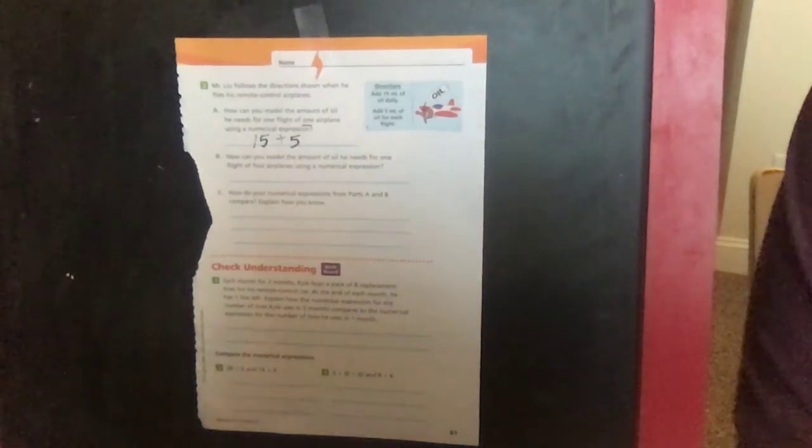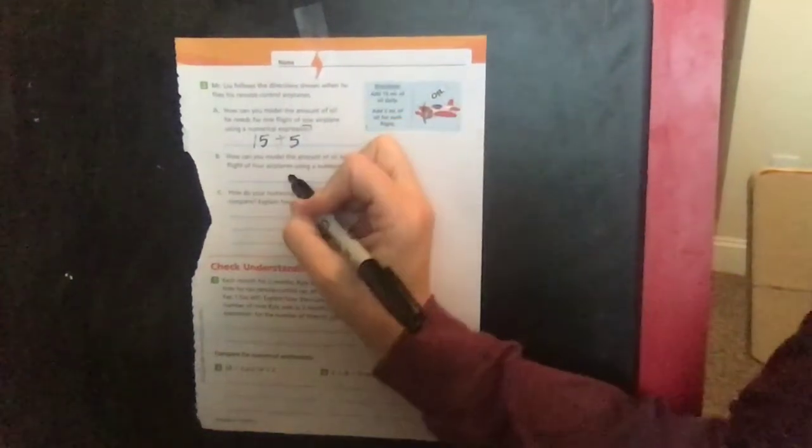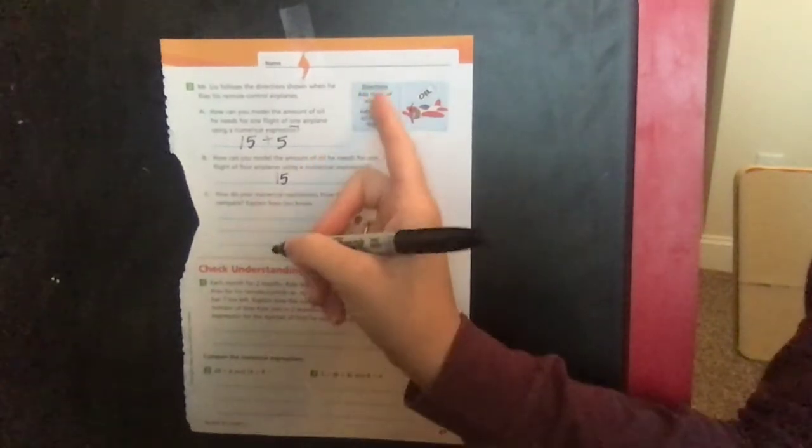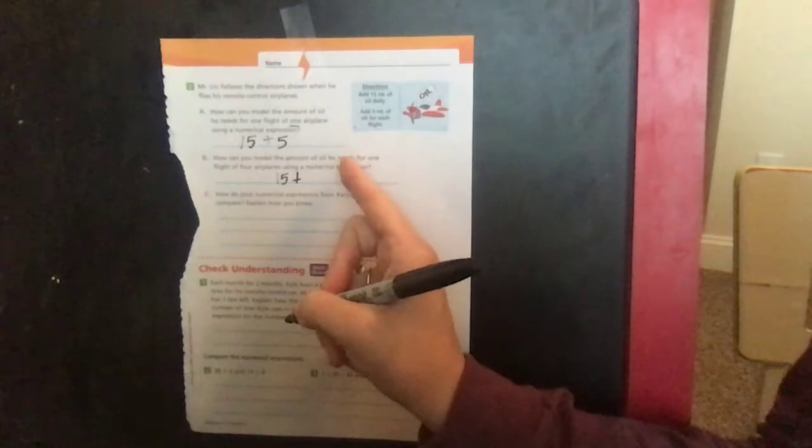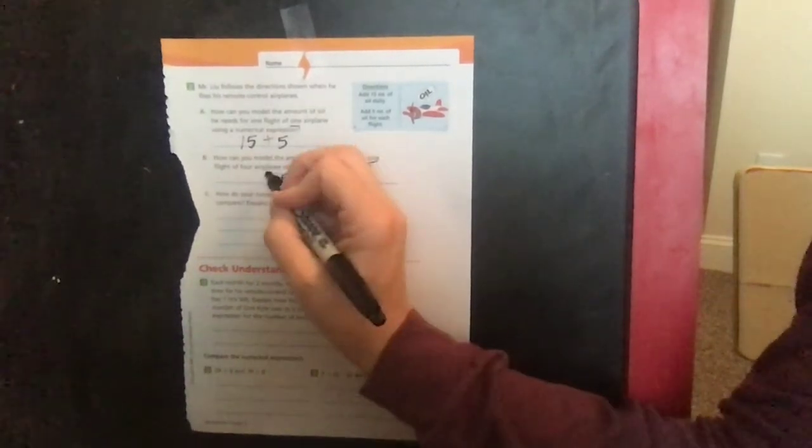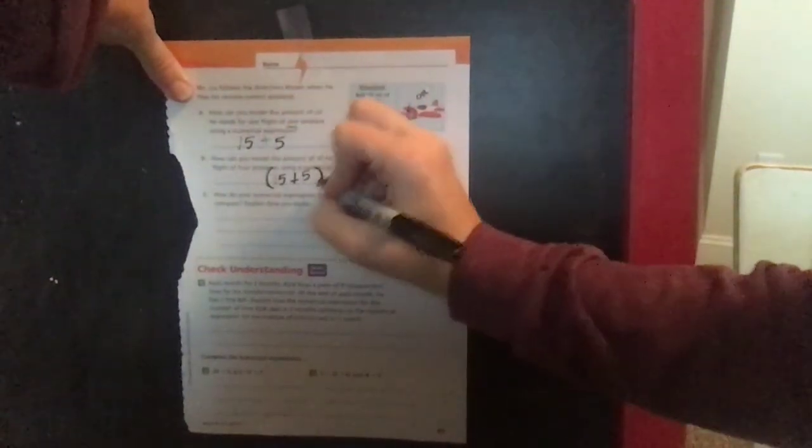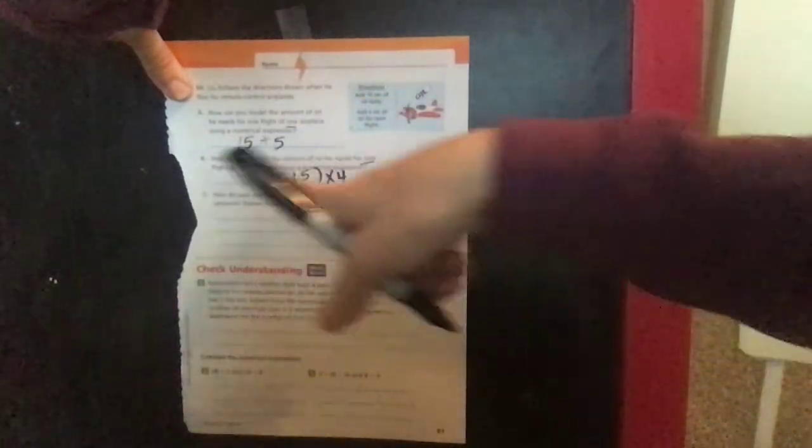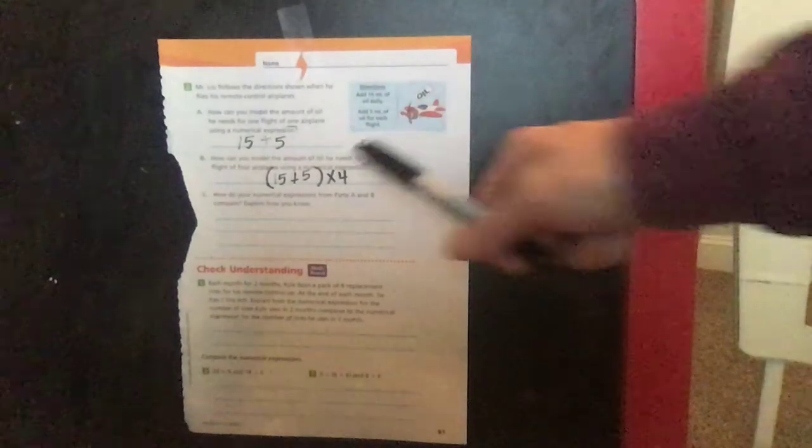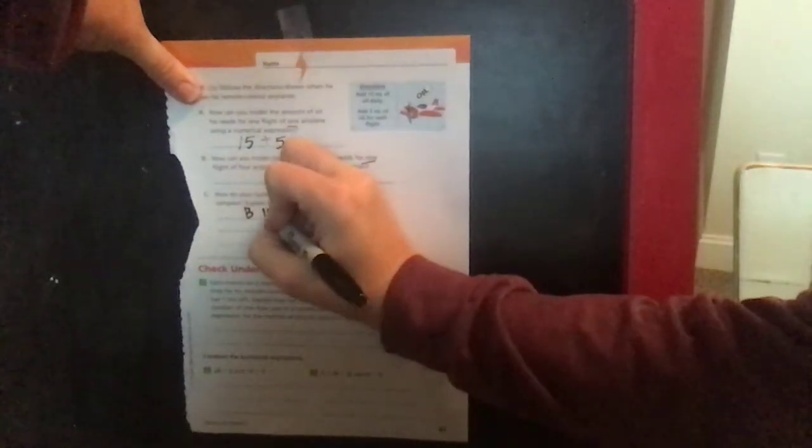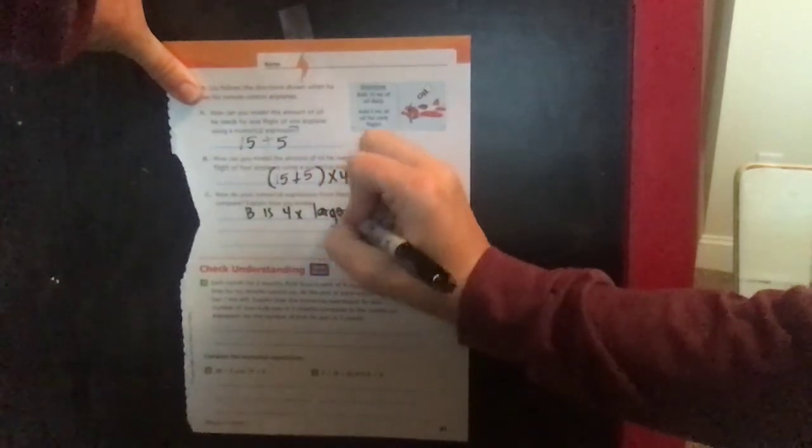But what if he is, like B says, how can you model what he needs for one flight of four airplanes? So it's one flight but it's four different airplanes. For that one, each airplane is going to need its daily amount, each airplane is going on one flight, but the difference is that it's not just one plane, it's four. So you could put four times (15 plus 5), or (15 plus 5) times four, it doesn't really matter which way we put it. How do these two compare? Well, we can easily look at that and see B of course is four times larger than A.